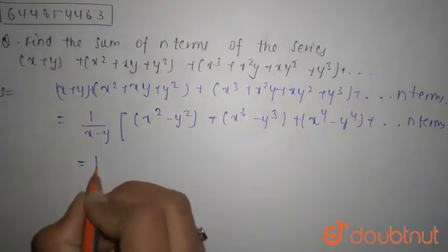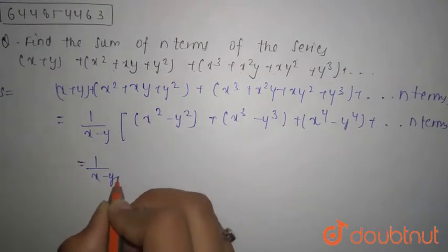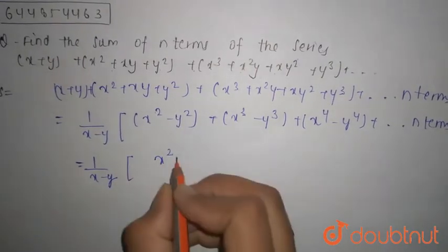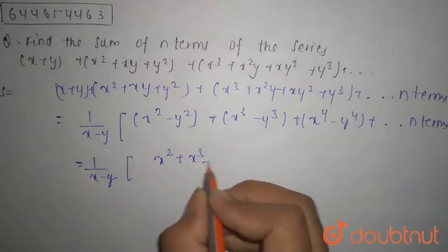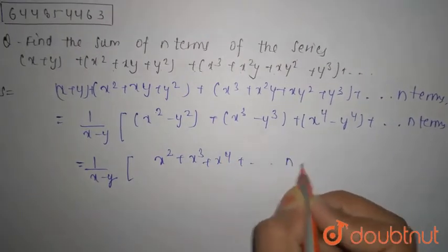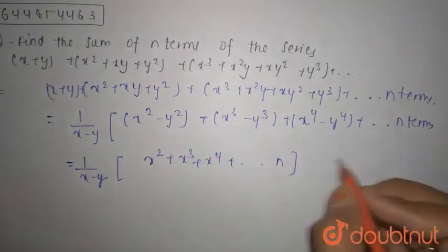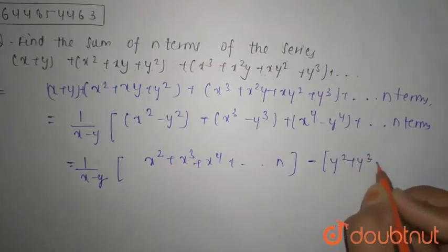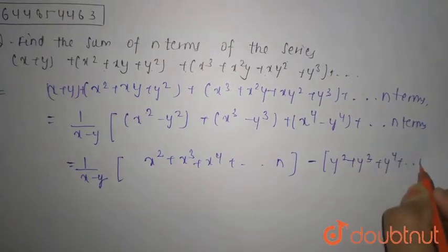This can be written as 1/(x-y) times [(x²+x³+x⁴+... n terms) - (y²+y³+y⁴+... n terms)].